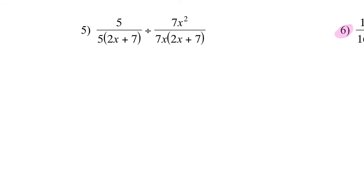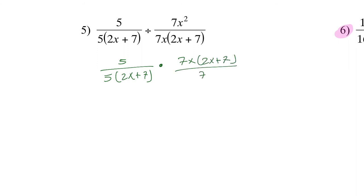Number 5 — as you can see, I have a division. When I divide fractions, I use keep-change-flip: I keep the first fraction the same, change the division to multiplication, and flip the second fraction. So I get 2x plus 7 divided by 7x squared. Now I cancel: 2x plus 7 cancels, 5 cancels, 7 cancels, and the x from x squared reduces, leaving 1 over x.